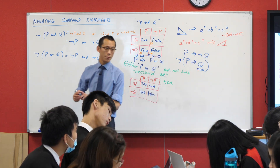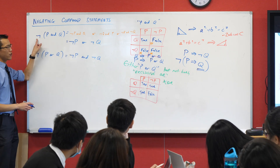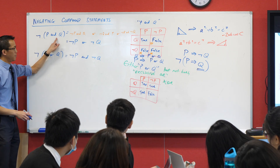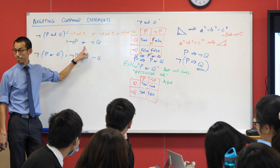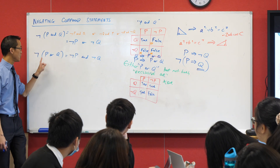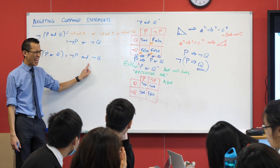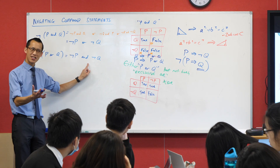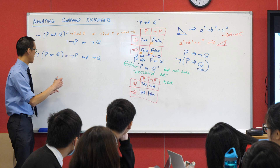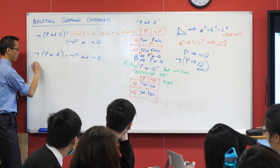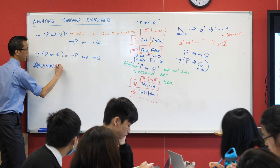The symmetry I see is: when you're negating an AND statement, you end up with an OR statement. When you negate an OR statement, you end up with an AND statement. That's nice — and it's going to have a really important implication for our negations of quantifiers.